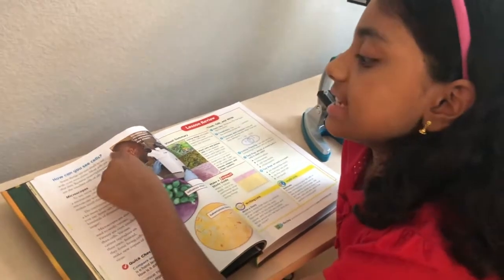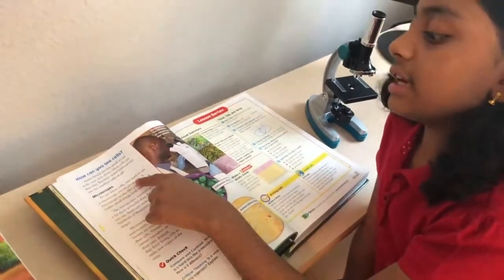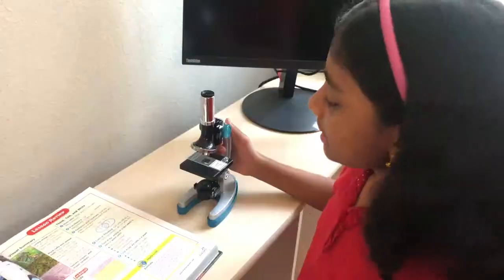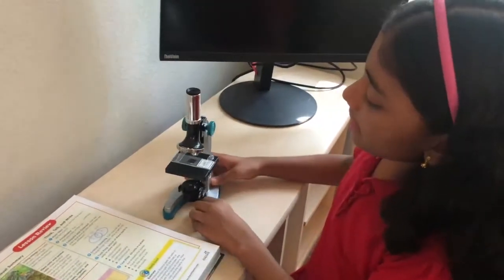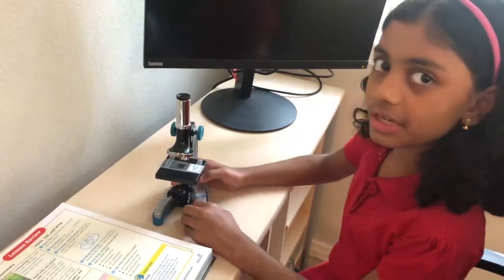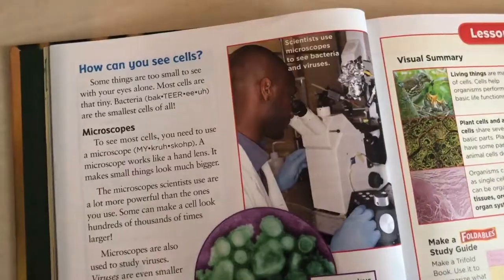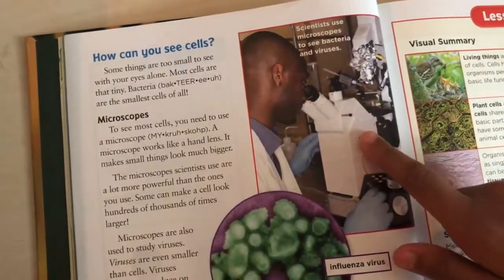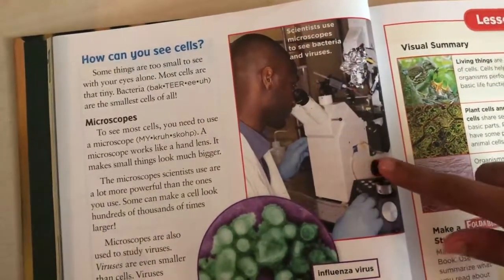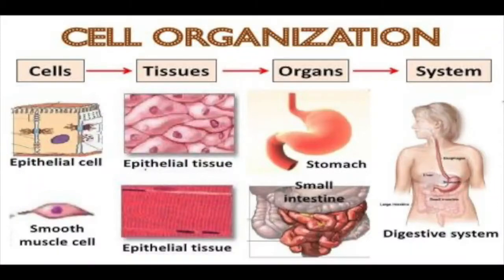How can you see cells? To see most cells, you need to use a microscope. This is my microscope, but scientists use microscopes that are a lot more powerful. Now we learned about cells and how they group to form an organ system. This is an example of how cells group to form the digestive system in human beings.